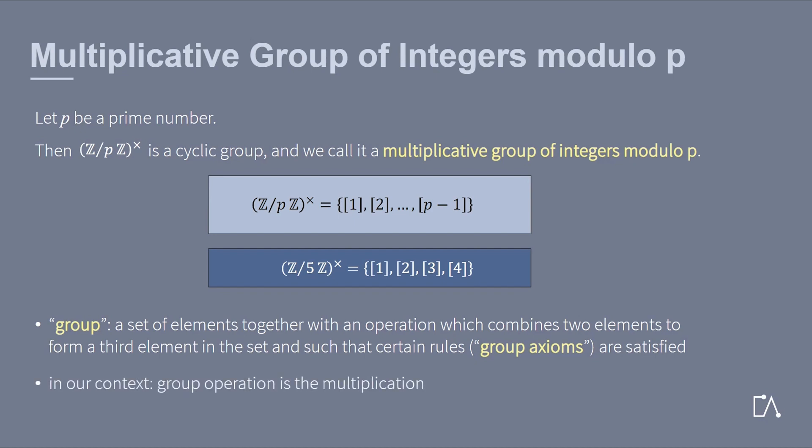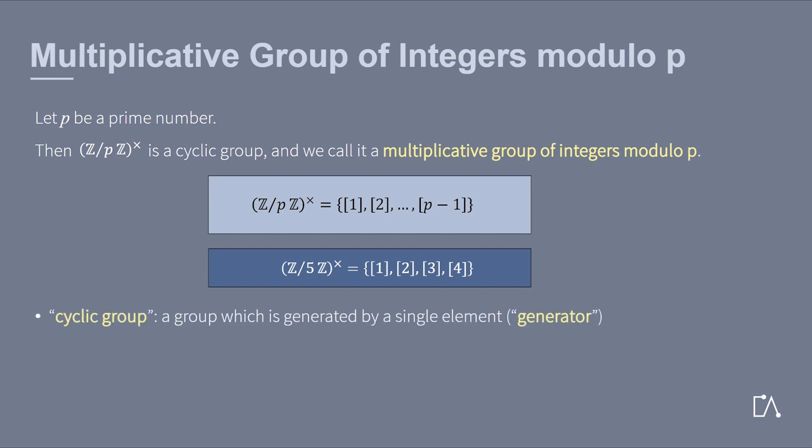In our context, the operation is multiplication, as the name already implies. Moreover, this group is a cyclic group, which means the group is generated by a single element, called the generator.